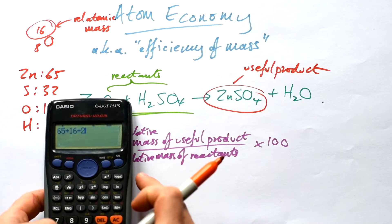Sulfur is 32, oxygen is 16, and hydrogen is 1. Let's figure out the relative formula mass of the reactants. We have 65 and 16 for zinc oxide, then two hydrogens (plus 2), sulfur (32), and four oxygens (plus 64). That gives us 179 - the relative formula mass of all reactants. What about the useful product? That's 65 plus 32 for sulfur, plus four lots of 16, giving us 161.